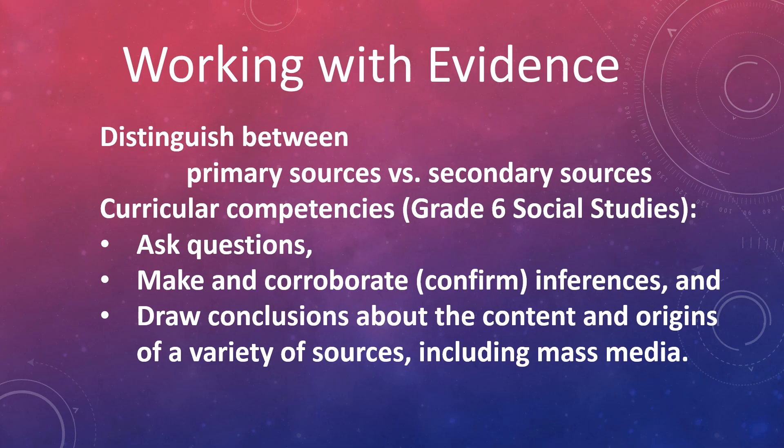In Grade 6 in British Columbia, the social studies curriculum has curricular competencies that include asking questions, making and corroborating or confirming inferences, and drawing conclusions about the content and origins of a variety of sources, including mass media. These are the things students working with evidence need to be able to do when using the historical thinking concept relating to evidence: ask questions, make and confirm inferences, and draw conclusions about the sources they are looking at.